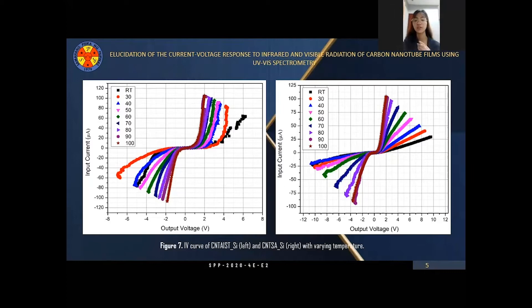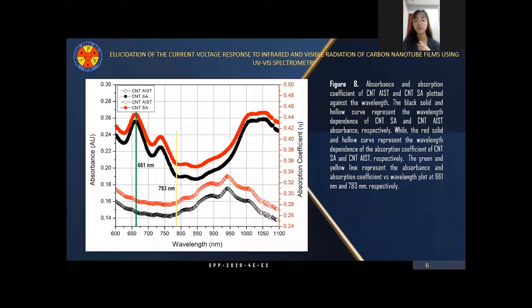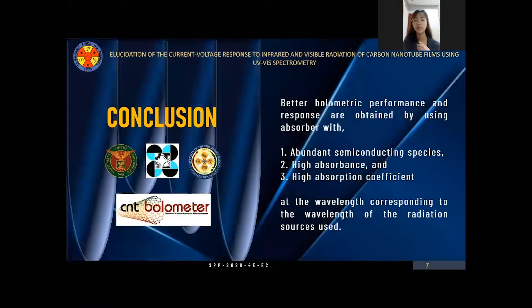The TCR and thermal conductance values obtained were also shown in Table 1. The absorption spectra of the two CNTs also showed that CNTSA exhibits a higher absorbance and absorption coefficient for the wavelength range of 600 to 1100 nanometers. Gaussian fitting of this spectra also showed that CNTSA has more abundant semiconducting species under its curve at 661 nanometer, but its peak almost coinciding with that of the semiconducting species. In conclusion, better performance is obtained by using absorber with abundant semiconducting species and high absorbance and absorption coefficient. Thank you.